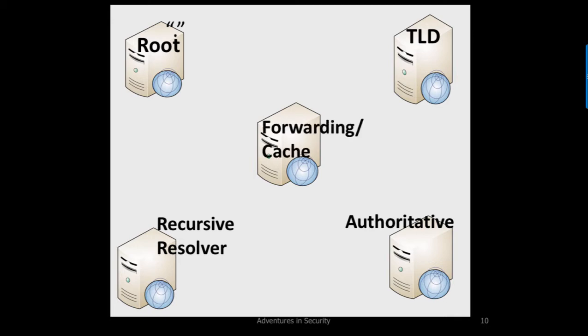Finally, there is the forwarding and caching server. This is separated out because it is possible the server with which local resolvers communicate does not manage the domain name resolution process itself. Rather, it forwards the recursive query to a recursive resolver server somewhere else. It would also contain a resolver cache containing all the domain name IP address pairs provided to all devices that send it requests for which the time to live has not expired.